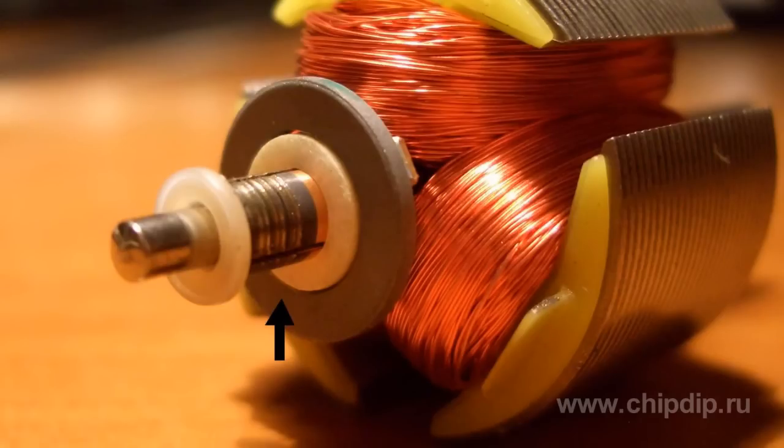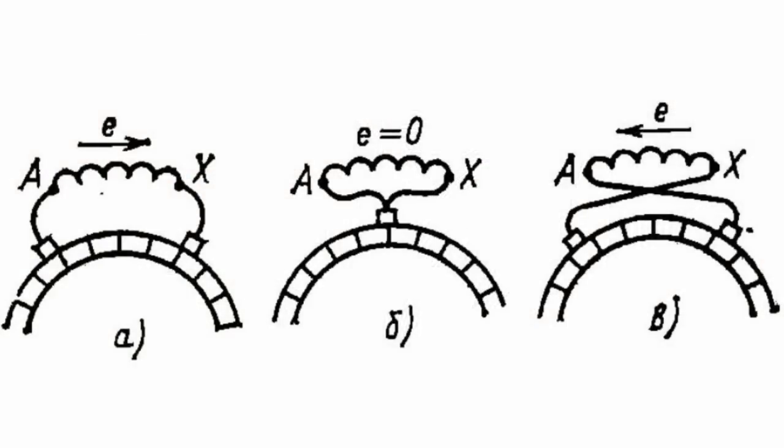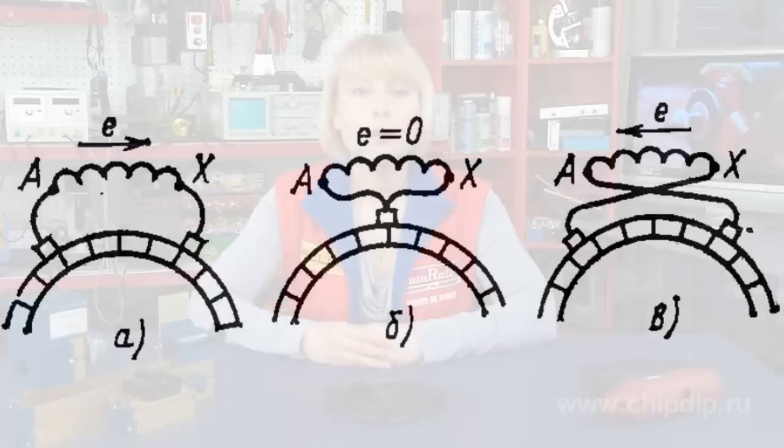You can set different speeds by changing the position of brushes. As compared to conventional inductor motor, Schrage Richter motor has a balanced design.